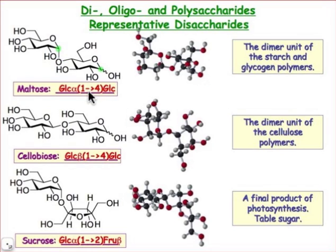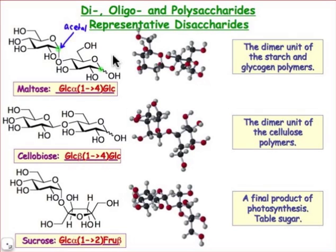Notice that in one case what we have is the acetal functional group — that is, the anomeric carbon of the sugar on the left-hand side of this disaccharide has the acetal functional group at the C1 position, whereas on the right-hand side, that sugar has the hemiacetal, since it has the hydroxyl group there.